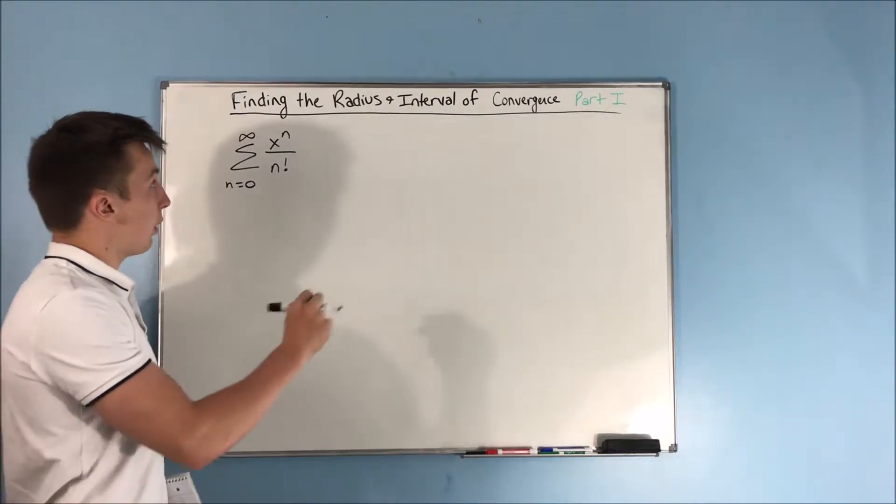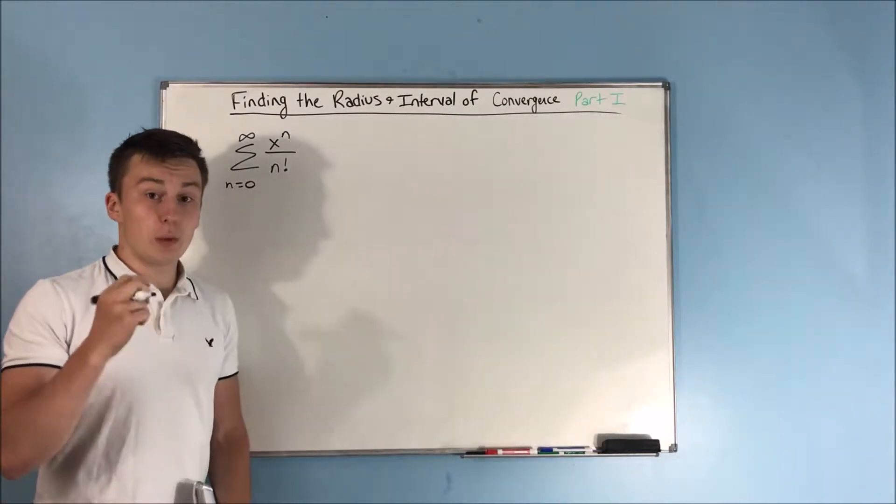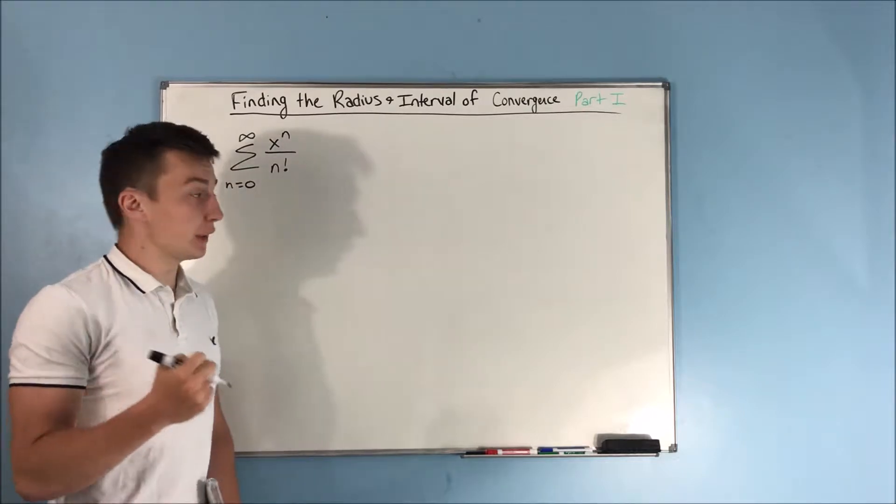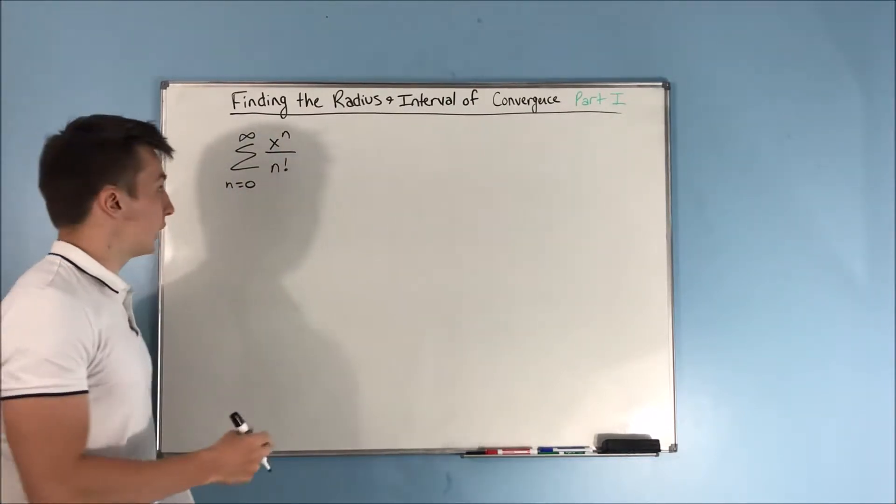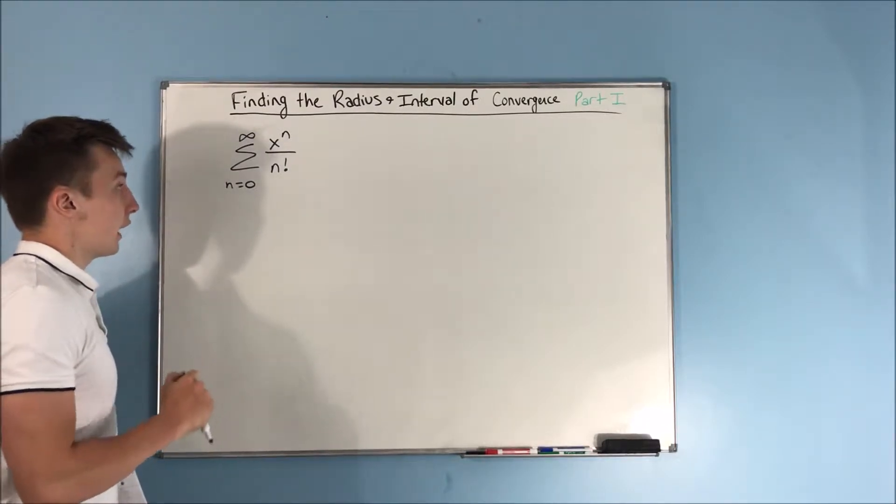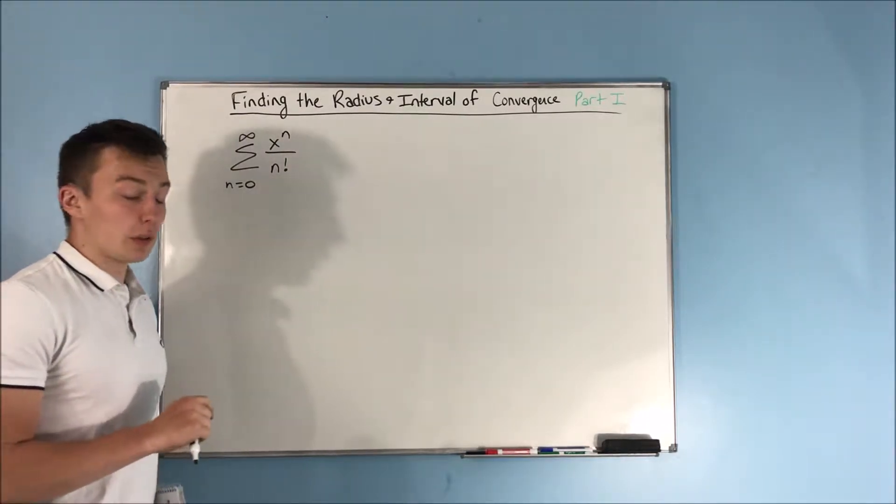Alright, so this video is going to be part 1 of finding the radius and interval of convergence. We want to find the radius and interval of convergence for this power series, the sum from n equals 0 to infinity of x to the n over n factorial.